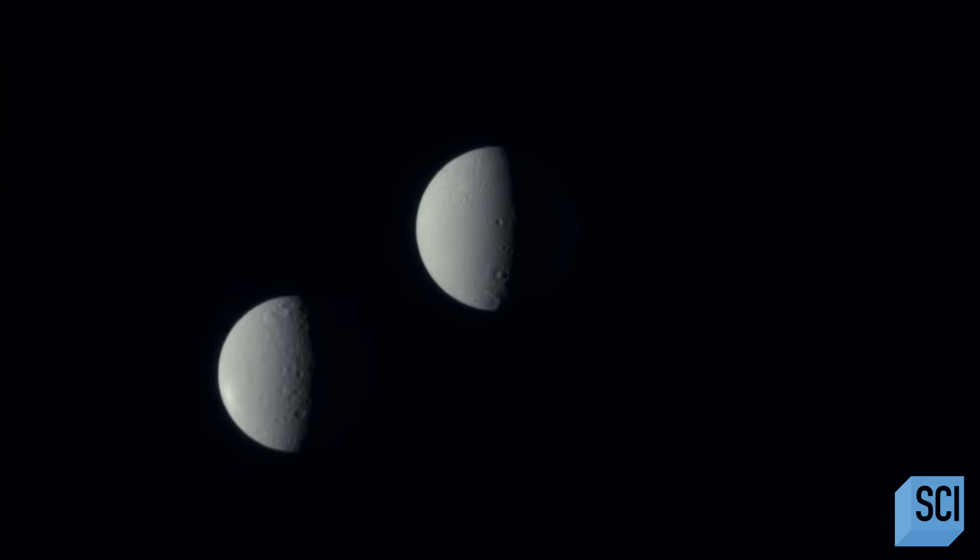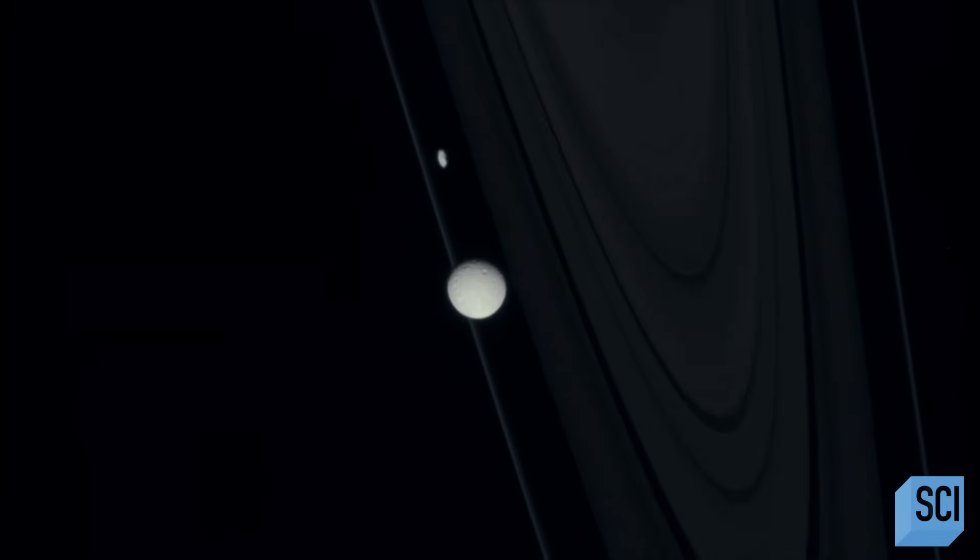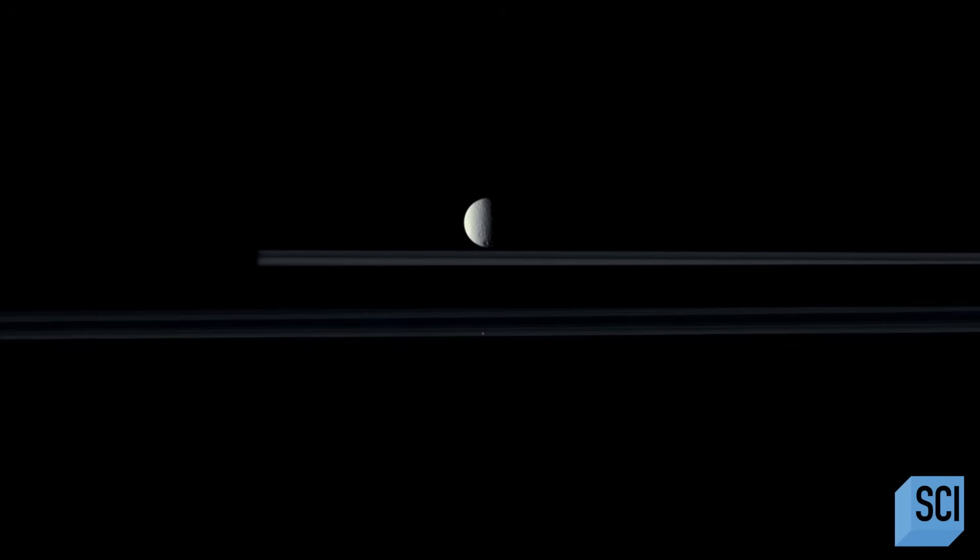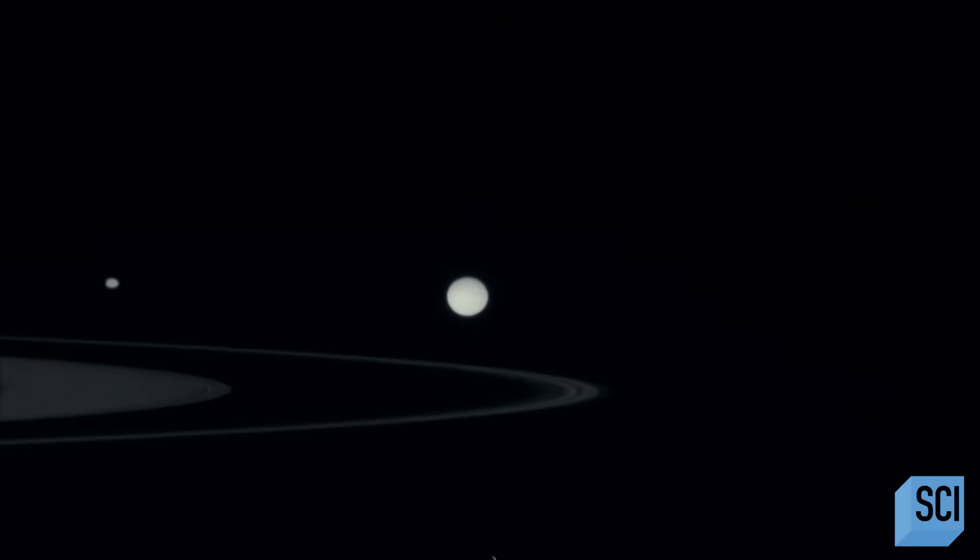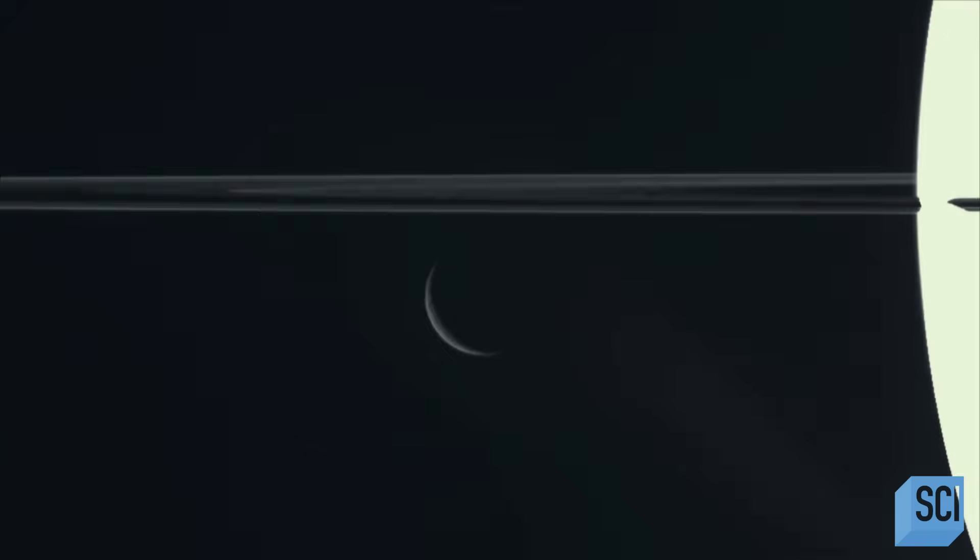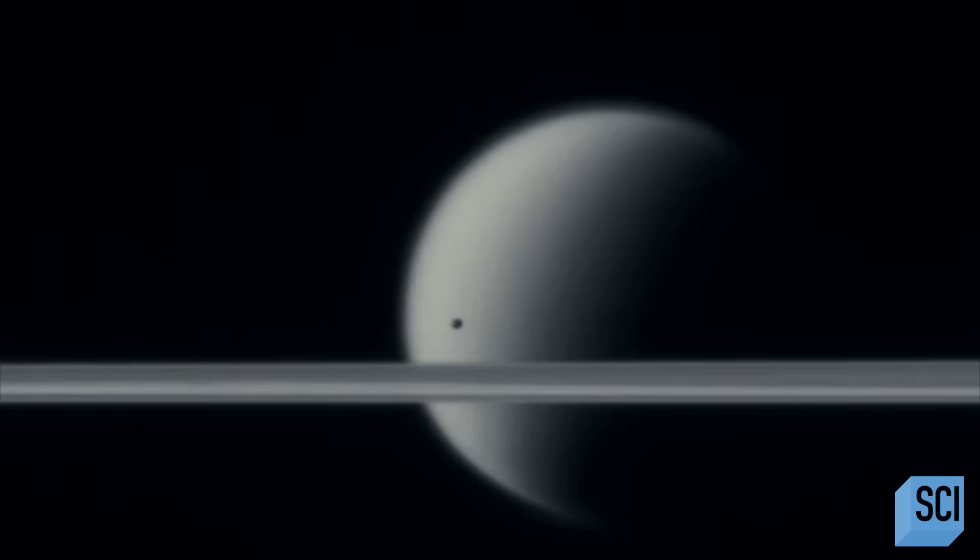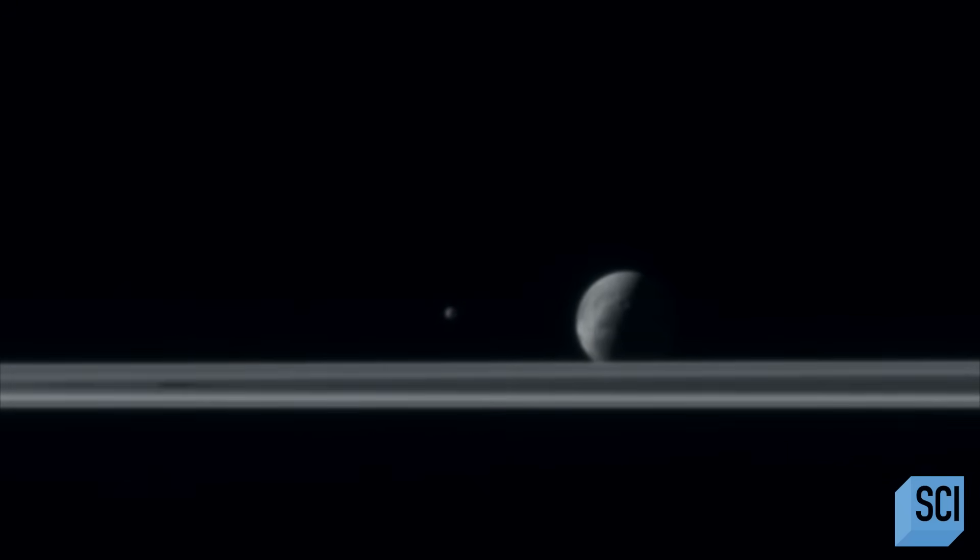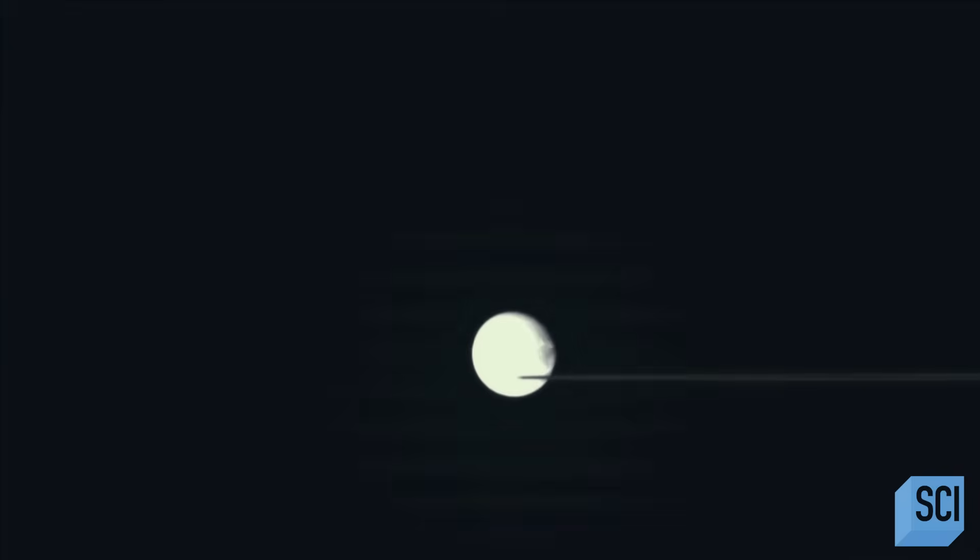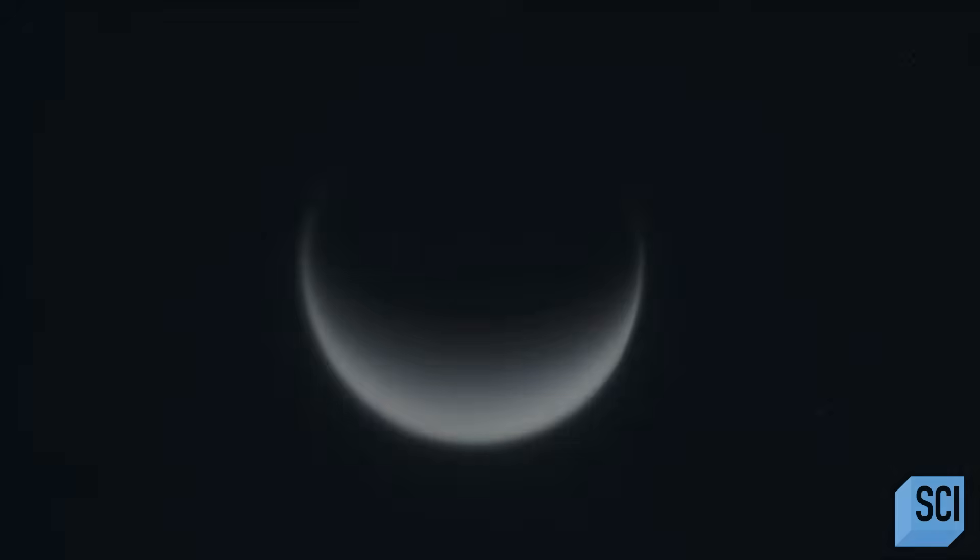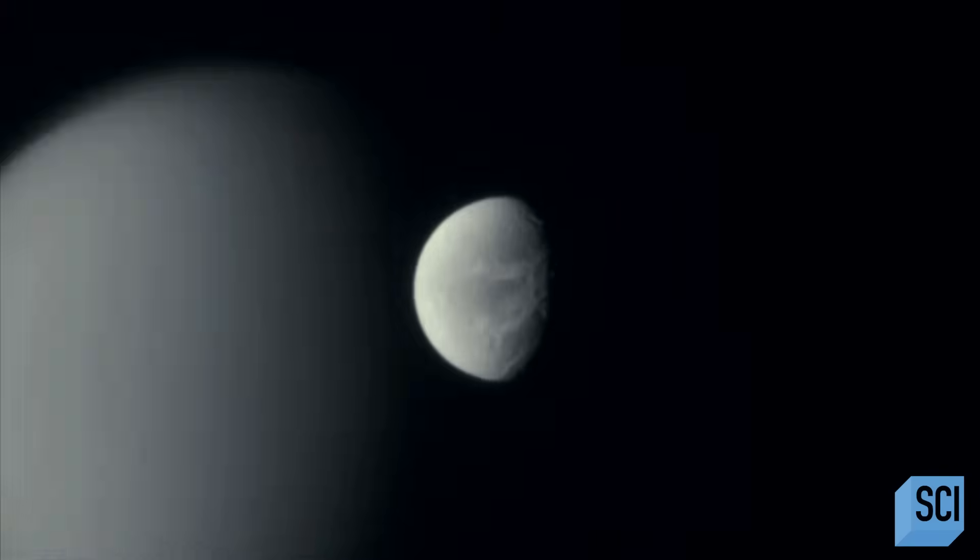He believes clues can be found in the moons that surround Saturn today. The Saturn system is unique of all the planetary systems. Go beyond the rings, and you get these middle-sized icy moons, and then suddenly you have the giant moon, Titan. Saturn has a vast number of moons, 62. They're all fairly small, except one. Titan, that's huge. If you were to put all 61 of Saturn's other moons together, they'd still be smaller than Titan.